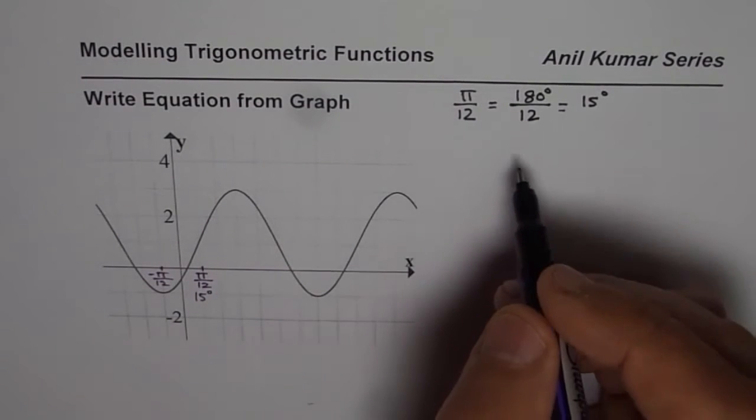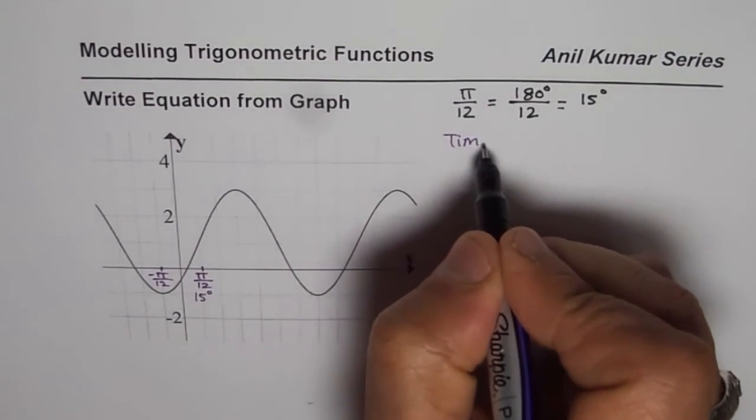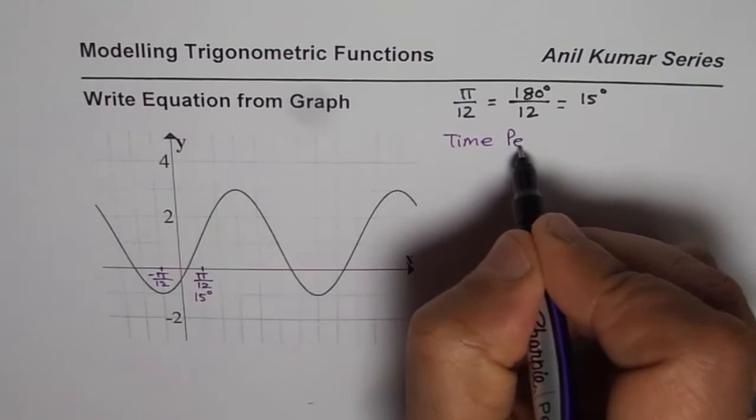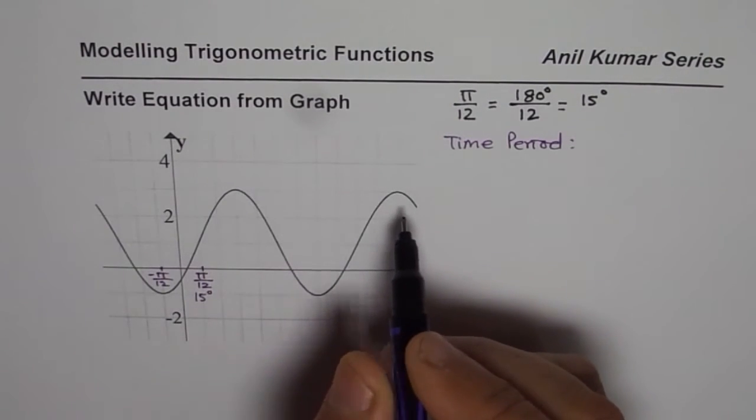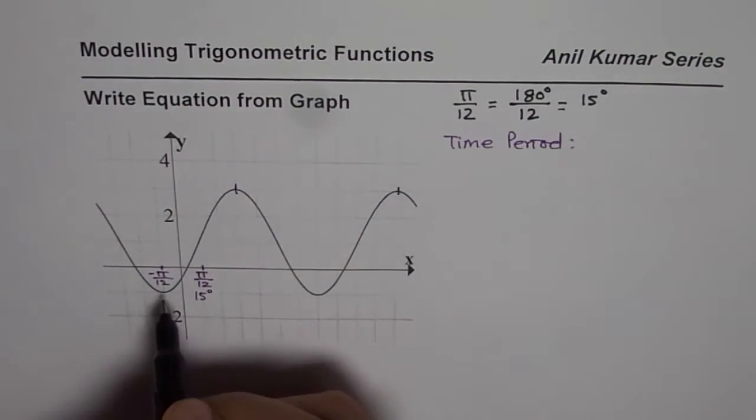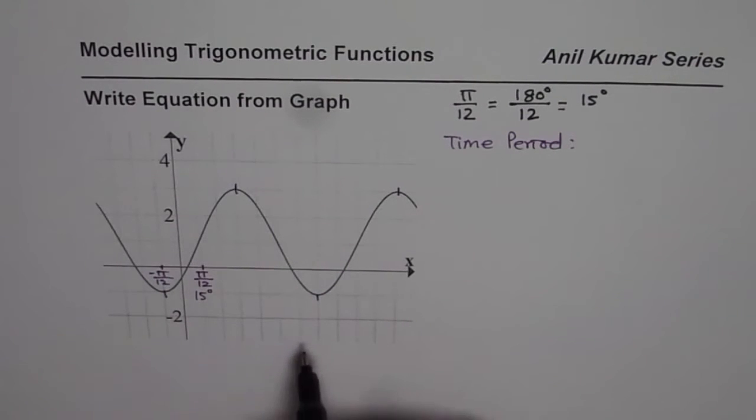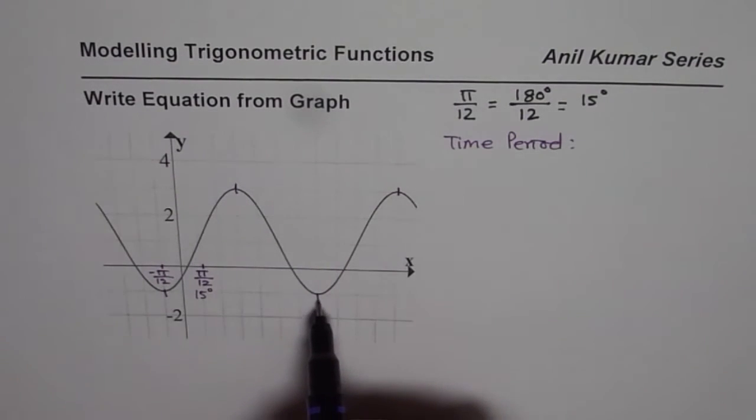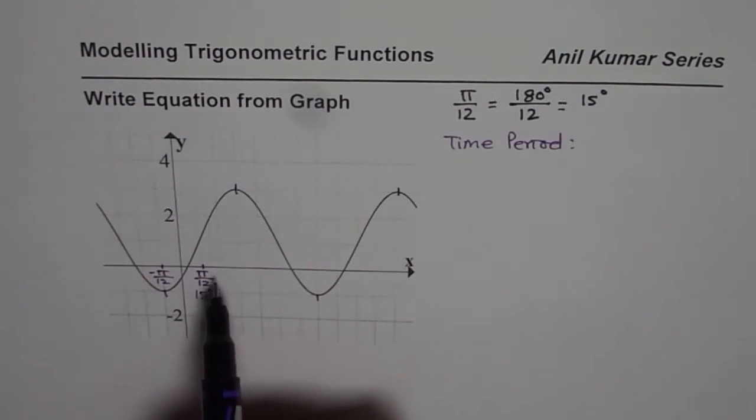Let us begin with the time period itself. Time period can be calculated by seeing horizontal distance between two maximums or between two minimums. And of course it is twice the distance between maximum and minimum. Now in this case each division is π/12.